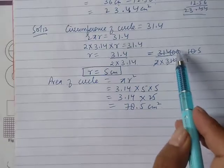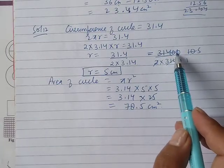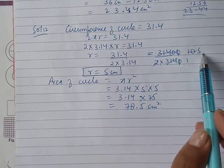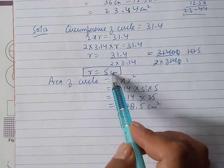2 pi r of a circle is 31.4 cm, then 2 times pi is approximately 6.28, so the radius is 5 centimeters.